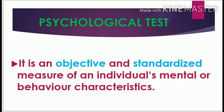The first method of assessment is a psychological test, and it is a formal method of assessment. As covered in Part 2 of this chapter, a formal method is always objective and standardized. So, a psychological test is an objective and standardized measure of an individual's mental or behavioral characteristics. Objective means the results cannot be biased by the psychologist's own views and beliefs — he cannot assess anyone's behavior based on his own experiences. Standardized means each psychological test has its own norms that must be followed while assessing anyone's behavior.